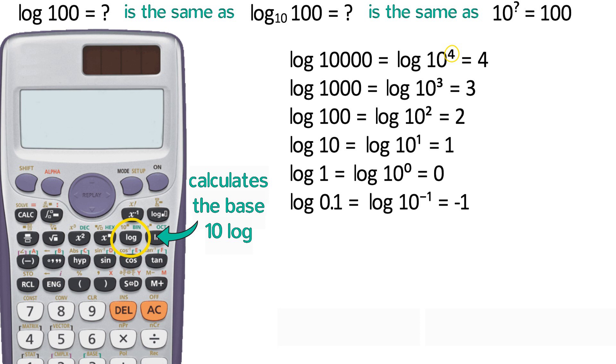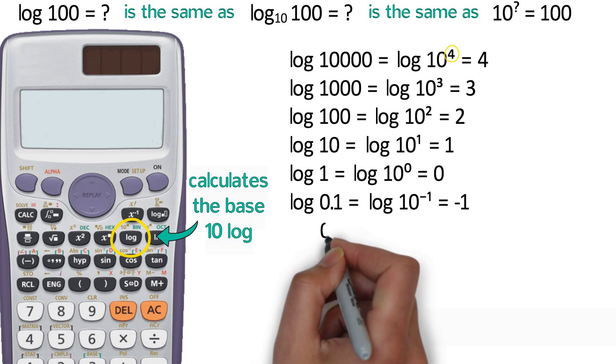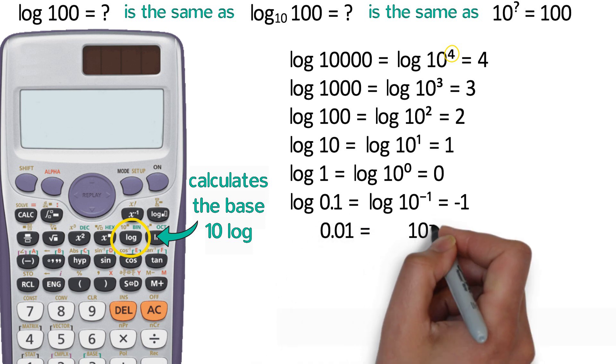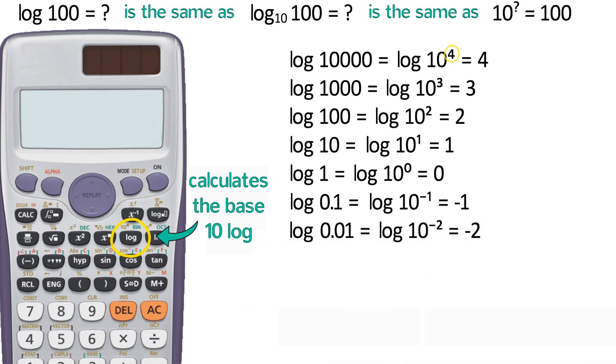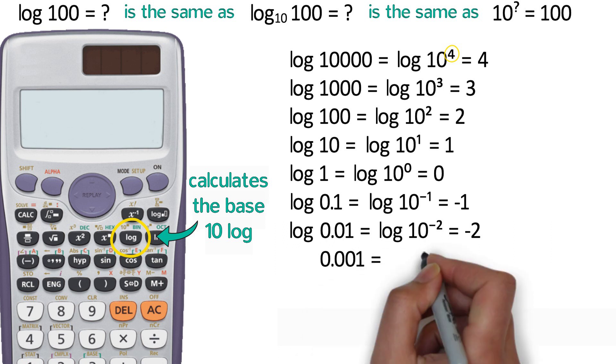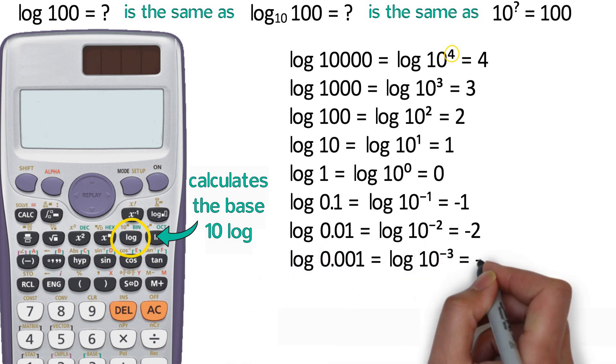In general, numbers greater than 1 will have positive log values, and numbers less than 1 will have negative log values. 0.01 is 10 to the negative second, so the log of 0.01 is negative 2. 0.001 is 10 to the negative 3, so the log of 0.001 is negative 3.